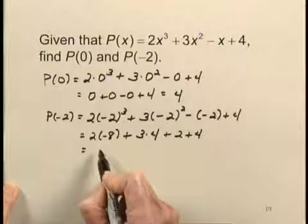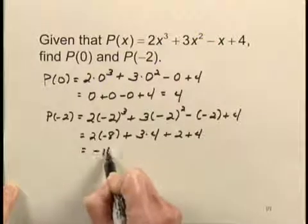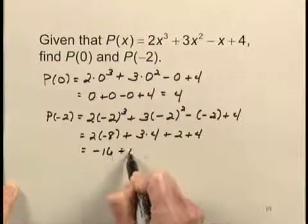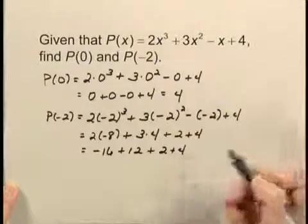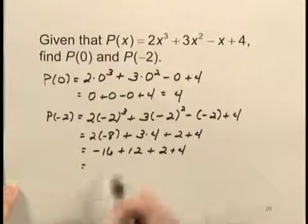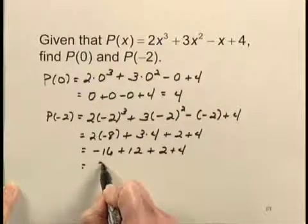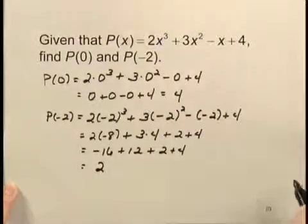And now doing these 2 multiplications, 2 times negative 8 is negative 16. And then we have plus 12 plus 2 plus 4. And when we carry out these computations, we get that P(negative 2) is equal to 2.